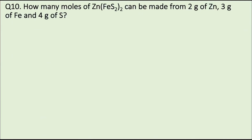Question 10. How many moles of Zn(FeS₂)₂ can be made from 2 g of zinc, 3 g of iron, and 4 g of sulfur?